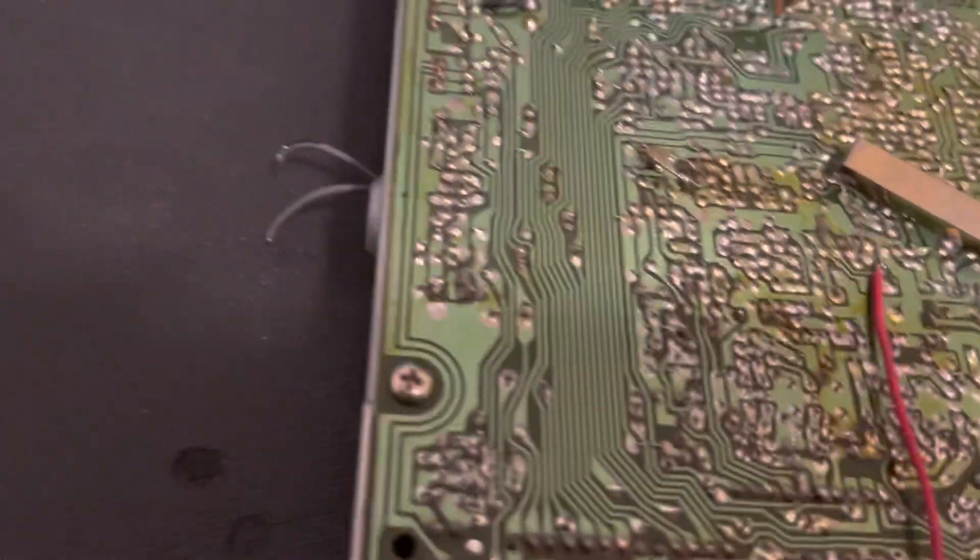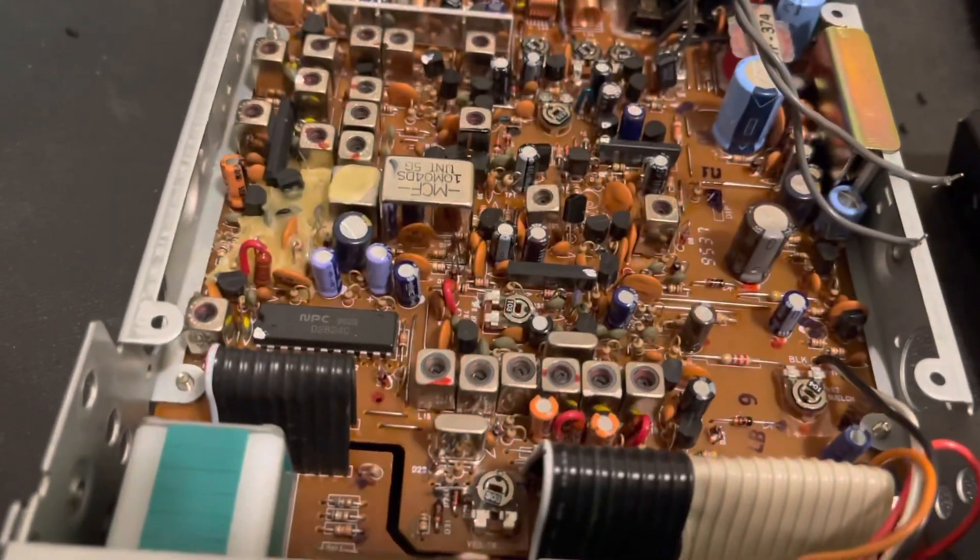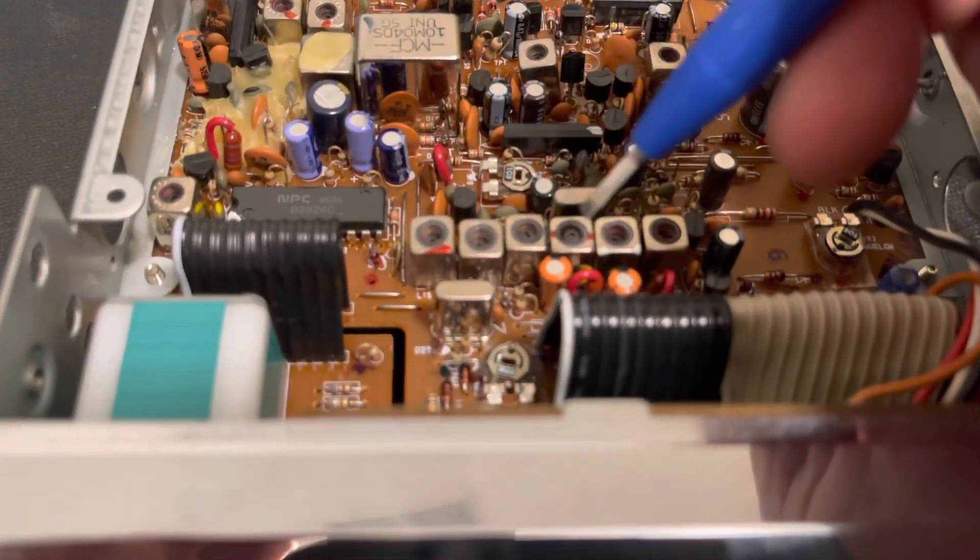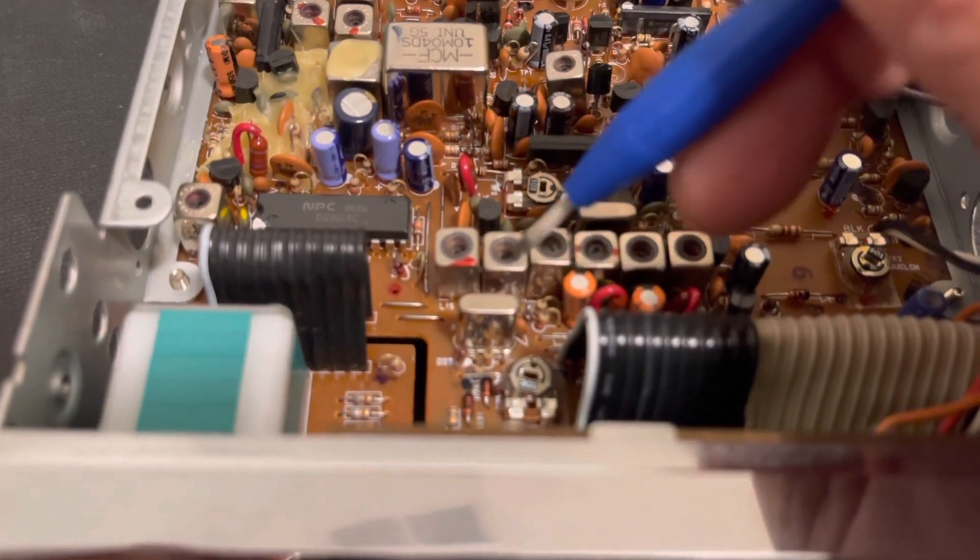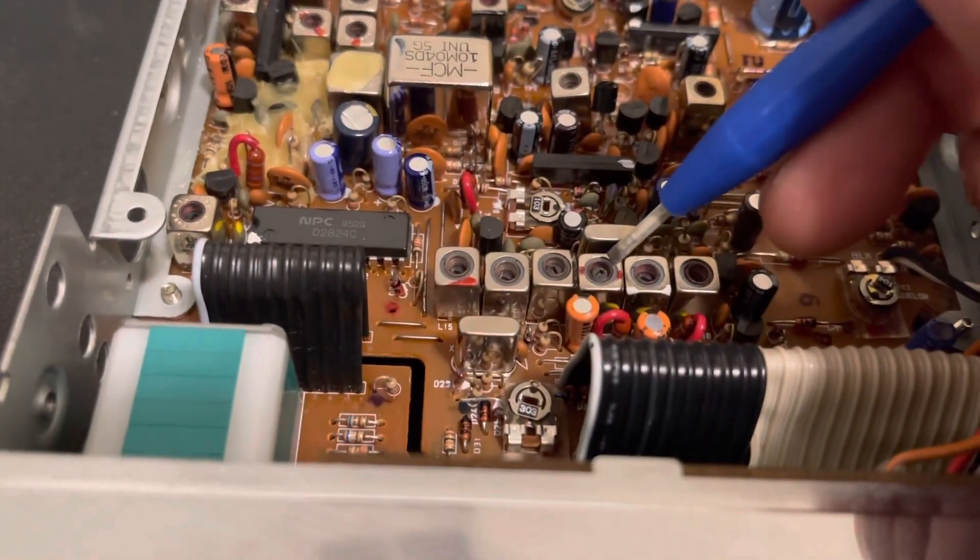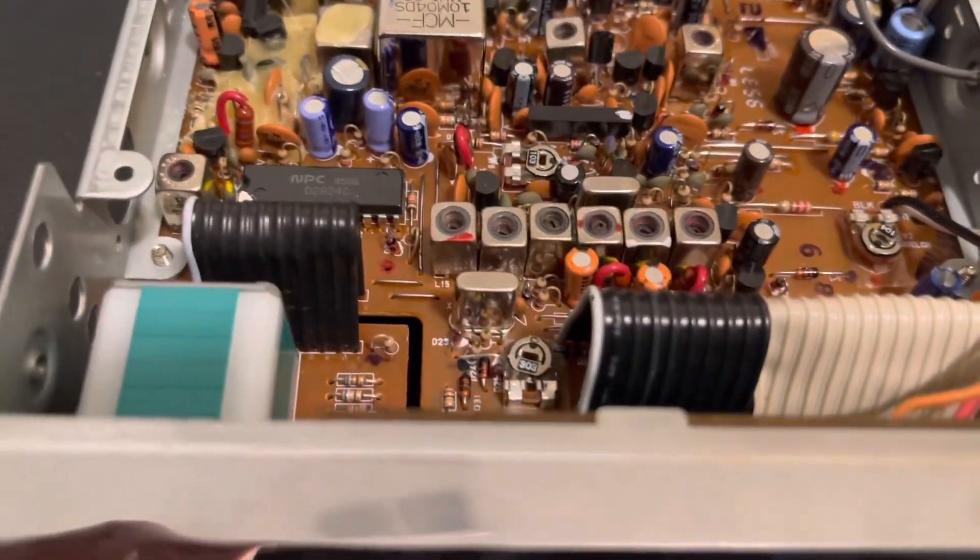And now once you do that, basically you're throwing your service manual PLL alignment right out the window at this point. So we've got our receive offsets here - lower sideband, upper sideband, and AM. And then we've got our transmit offsets here - lower sideband, upper sideband, AM.